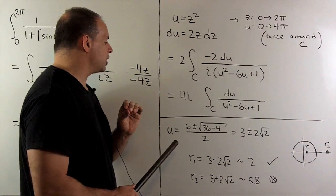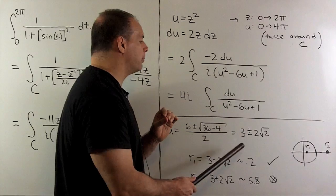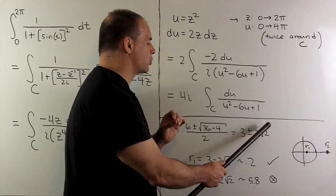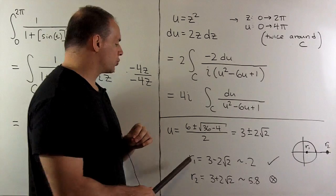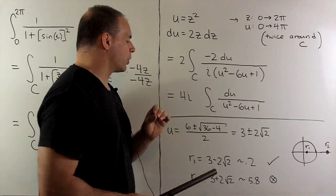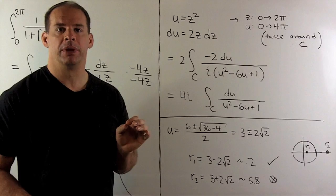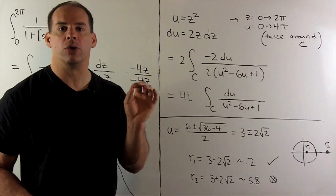Factor the denominator. I get, using the quadratic equation, U equals 3 plus or minus 2 times the square root of 2. So, we have two roots. First root, 3 minus 2 square root of 2. It's roughly 0.2. So, that's inside the unit circle on the real axis.